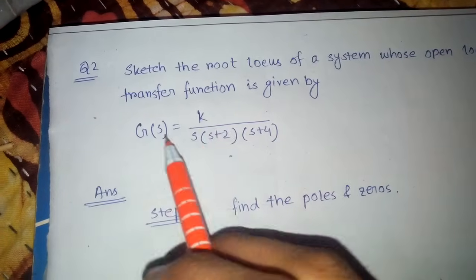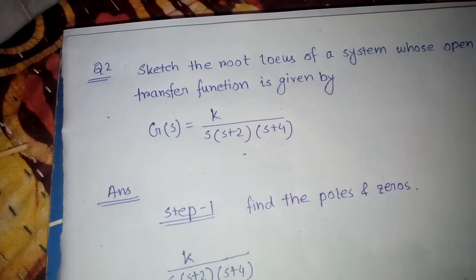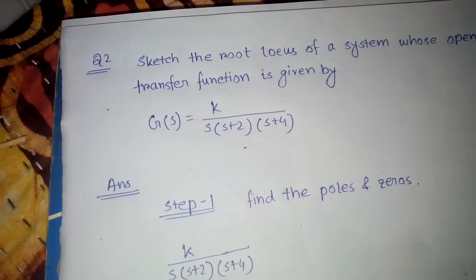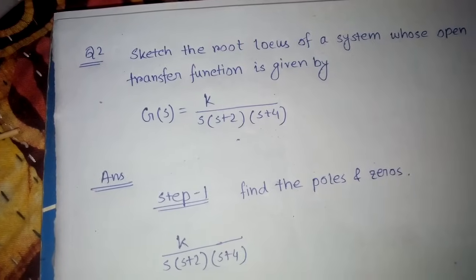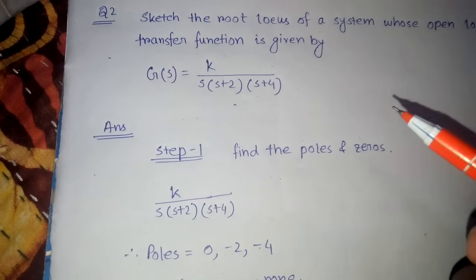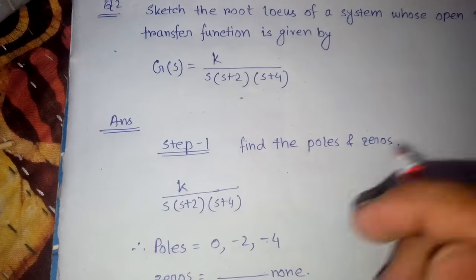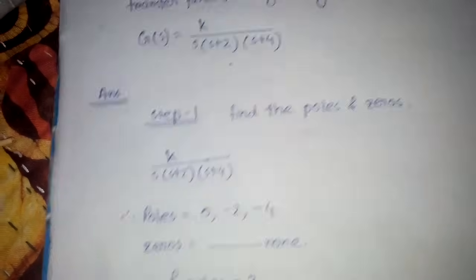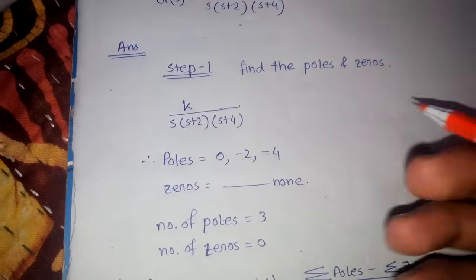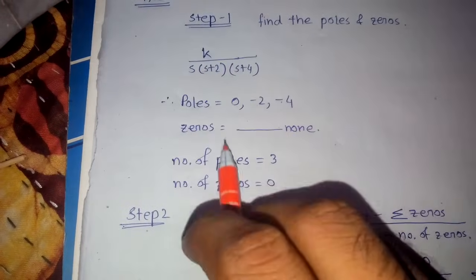Here is another example of root locus. The difference here is there is no use of angle of departure because there are no imaginary poles. This is one type where there are no imaginary poles. Step 1 is the same as before — you have to find out the poles. The poles are at 0, minus 2, and minus 4.